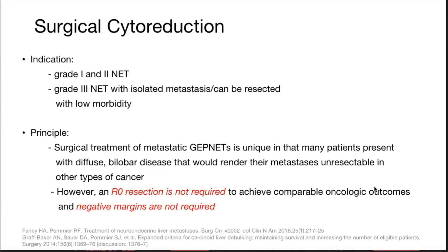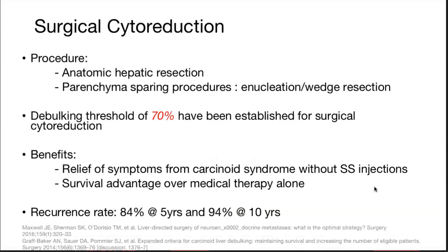Even in patients with bilobar involvement of the liver, R0 resection is not required to achieve comparable oncologic outcomes, and negative margin is not required. Tumor debulking of 70% is the established threshold for hepatic metastasis. Procedures can be anatomical hepatic resection or parenchymal-sparing such as enucleation or wedge resection. Debulking leads to relief of symptoms from carcinoid syndrome and has a survival advantage over medical therapy alone such as long-acting octreotide LAR or lanreotide.